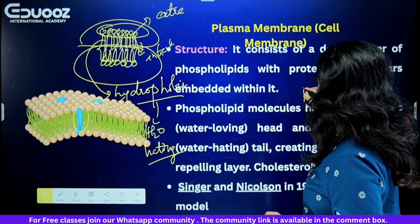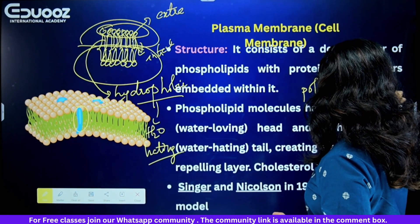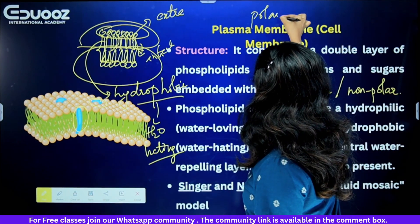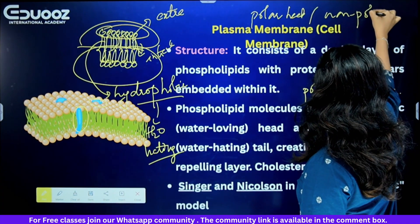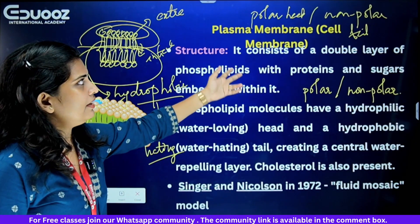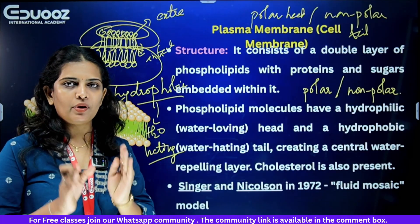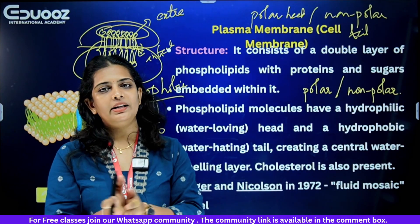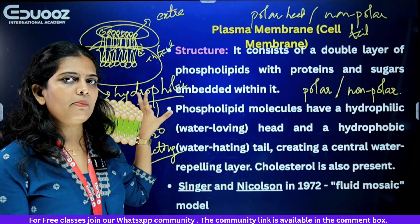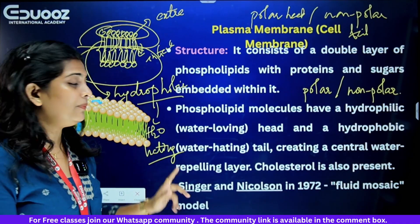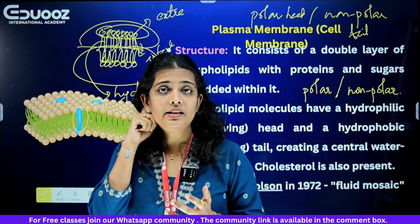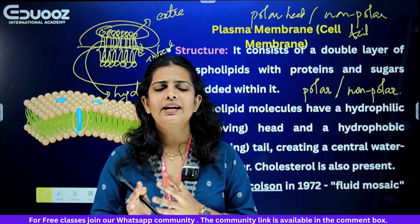The head can also be described as polar, and the tail as non-polar. So the plasma membrane head is polar — hydrophilic and water-loving — while the tail is non-polar — hydrophobic. Cholesterol is also present. There are two lipid layers: a polar head and a non-polar tail. These concepts define the phospholipid bilayer.